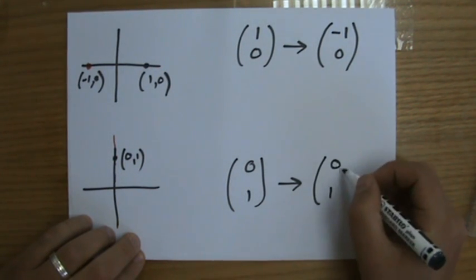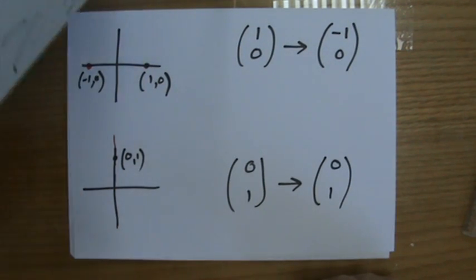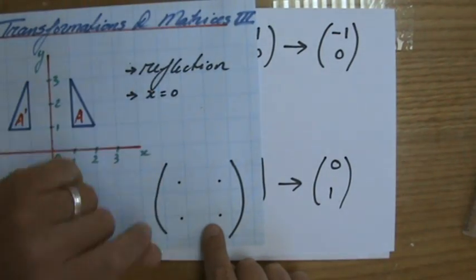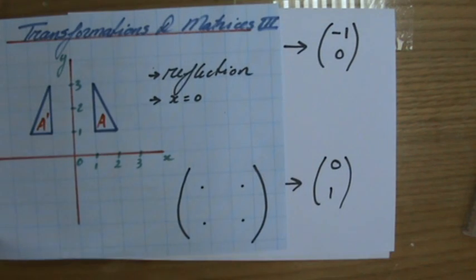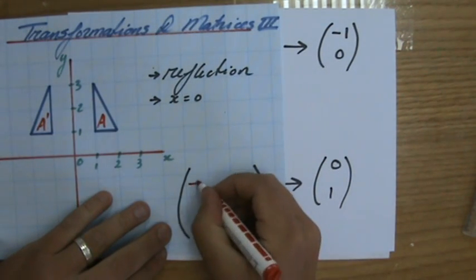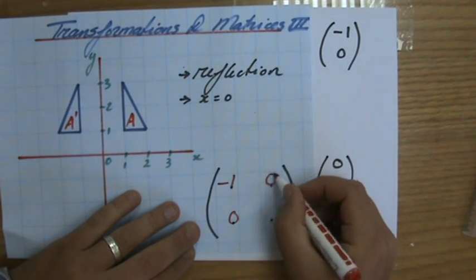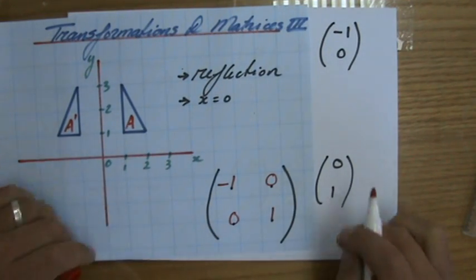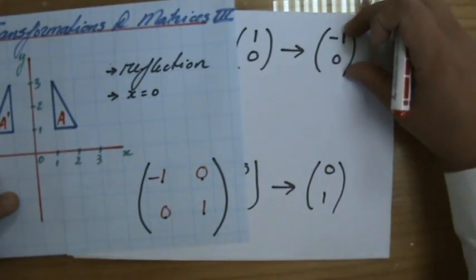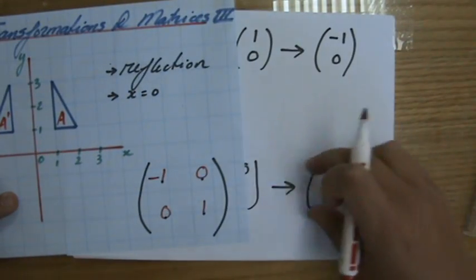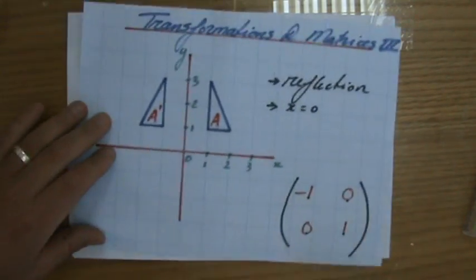So what is the matrix now that describes this particular transformation? That is (-1,0) and (0,1). I'm just going to put it in here now: -1, 0, 0, 1. So again, you put in this one: -1, 0, and that one: 0, 1. And that is your answer.